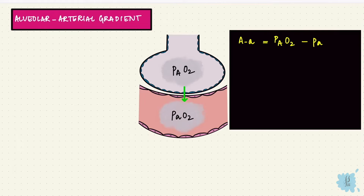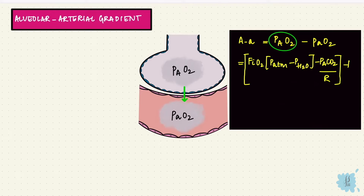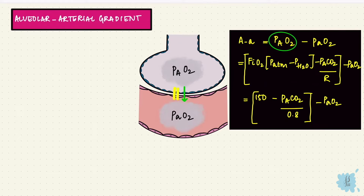Using the formula for alveolar oxygen, the alveolar-arterial gradient equals 150 minus alveolar carbon dioxide over 0.8, minus the arterial oxygen. At complete equilibration it'll be close to zero — no difference between alveolar and arterial oxygen — but that's ideal. Normally the gradient is age divided by 4 plus 4.